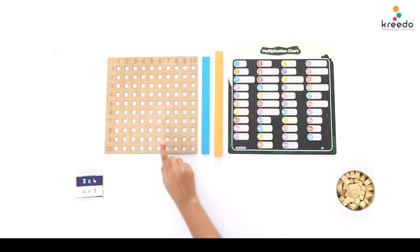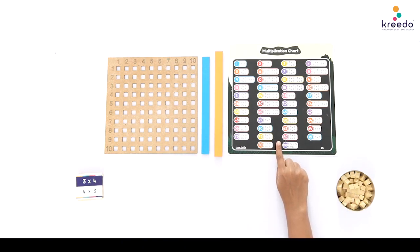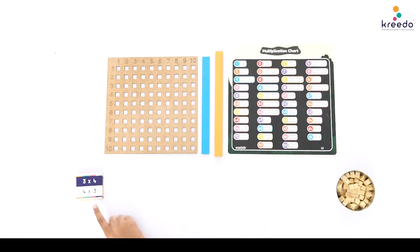Procedure: place the multiplication board, the ball of unit cubes, multiplication fact chart, and the stacked multiplication fact cards in front of the child.